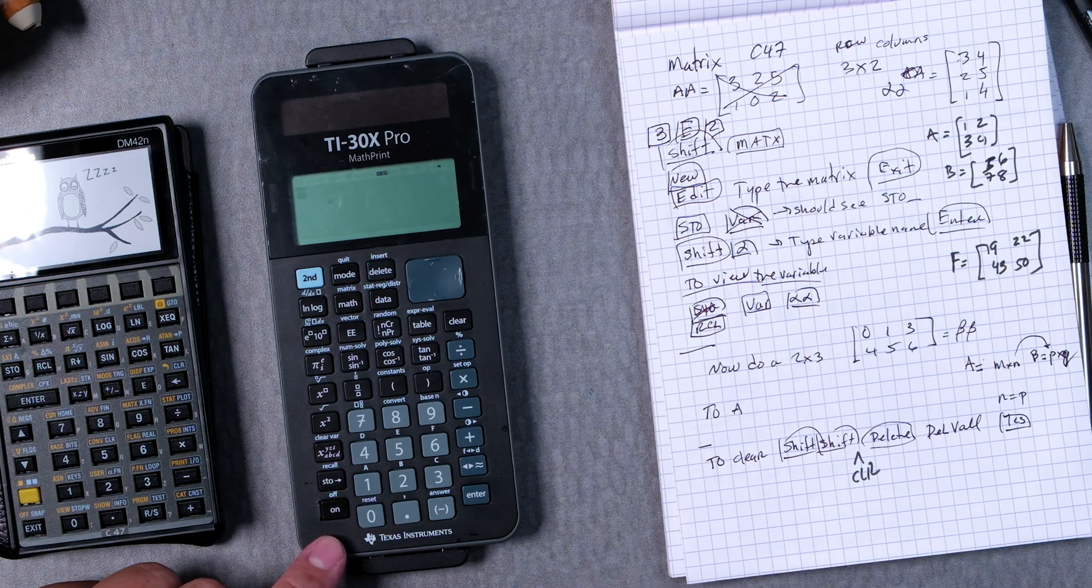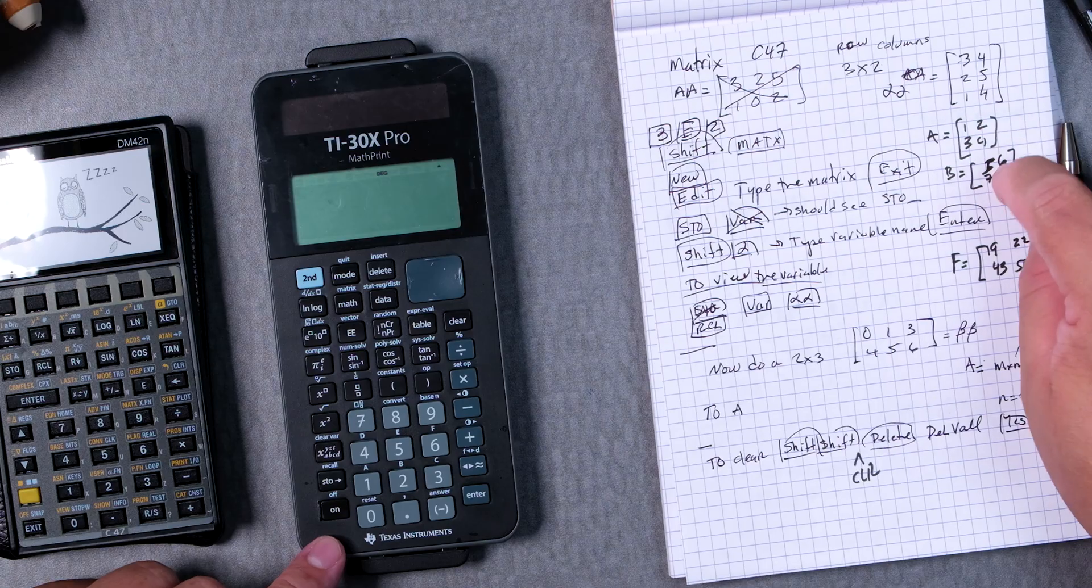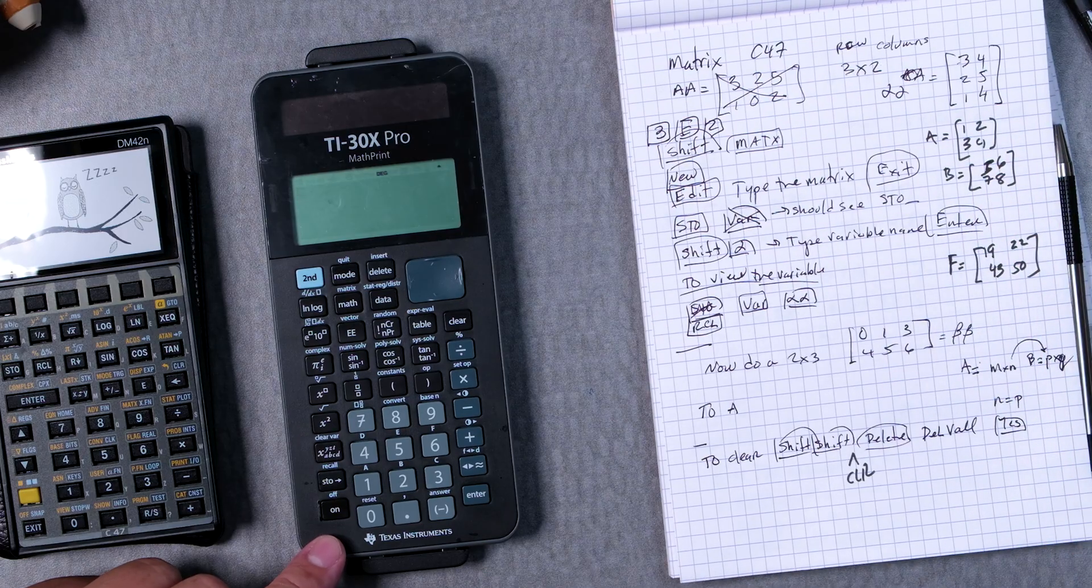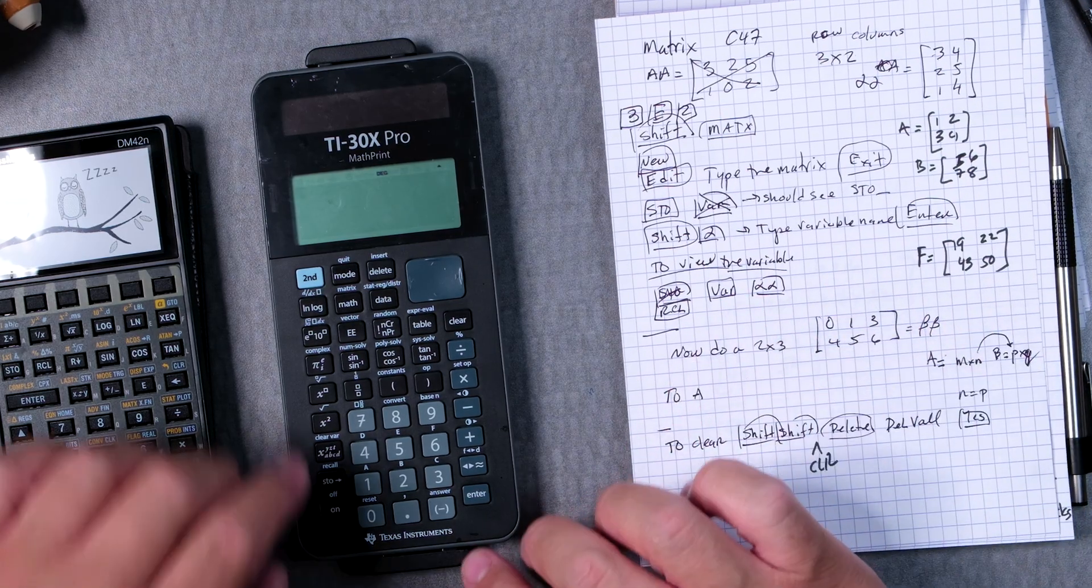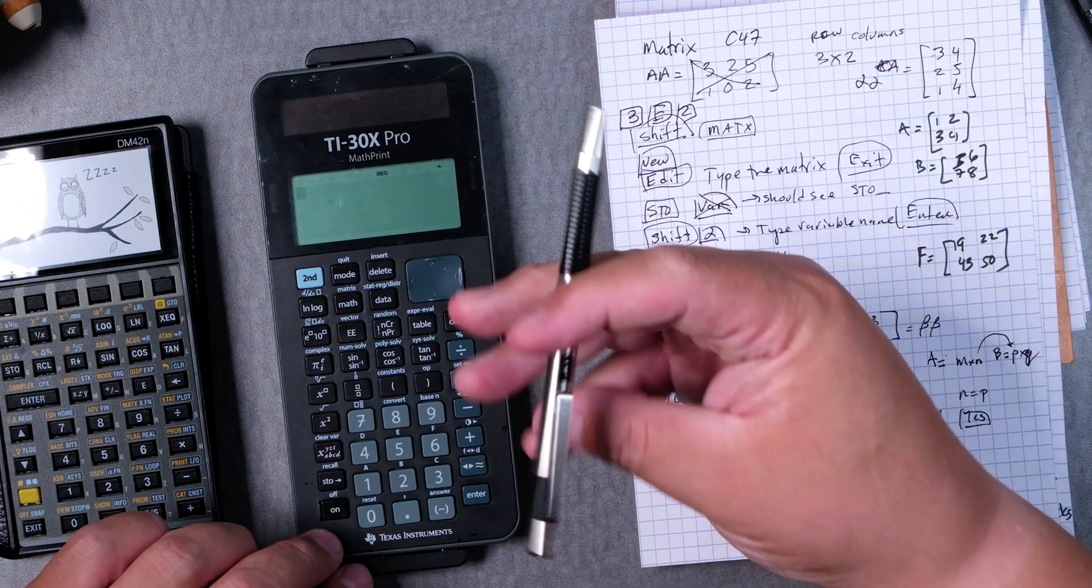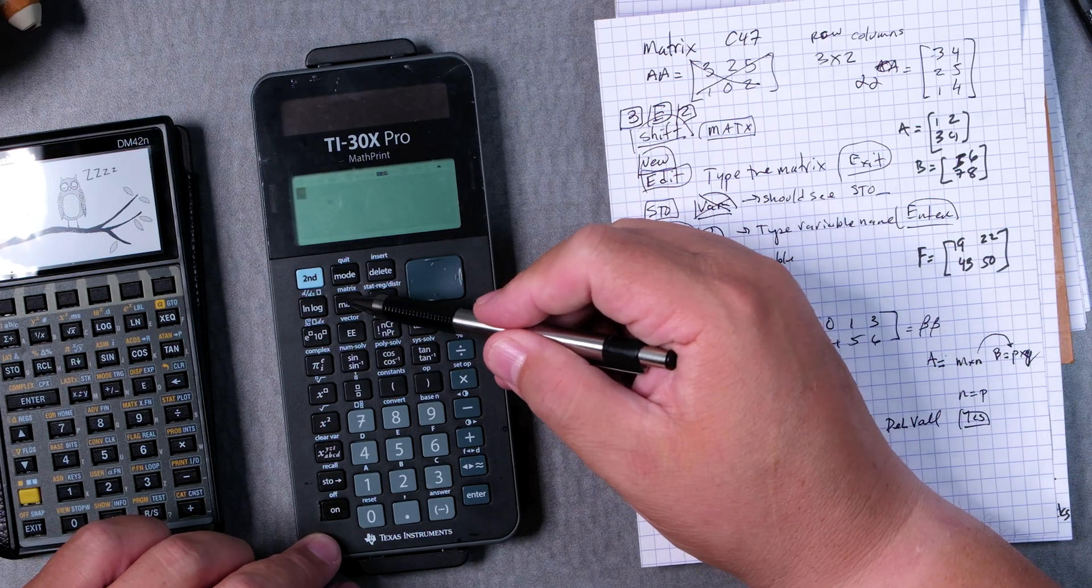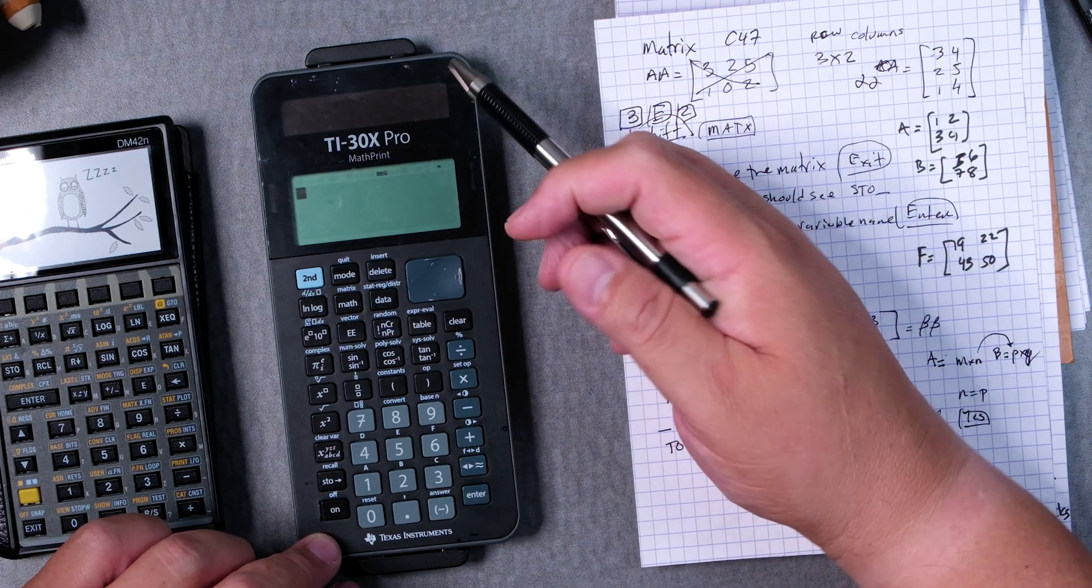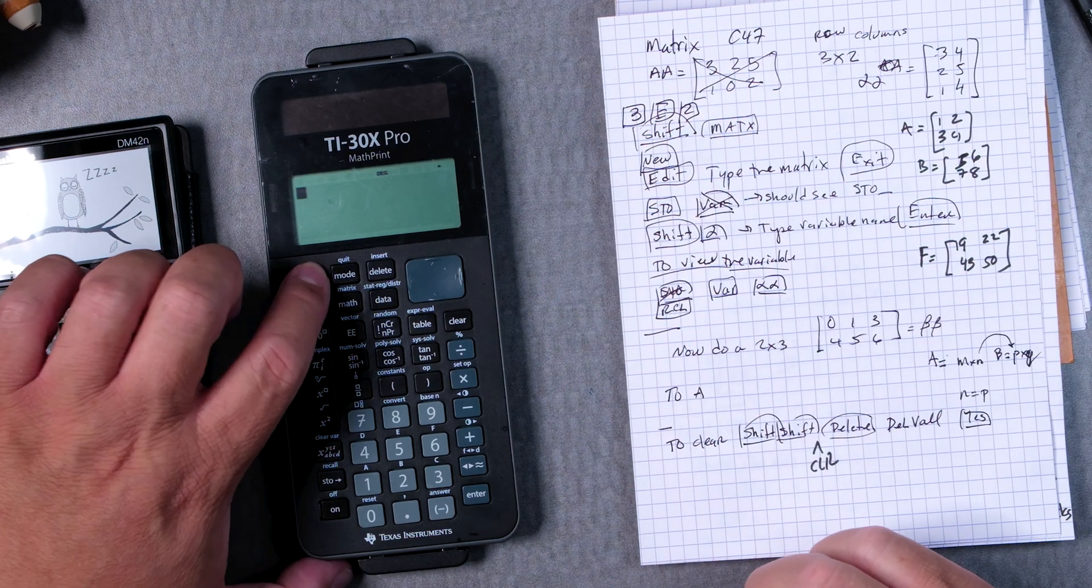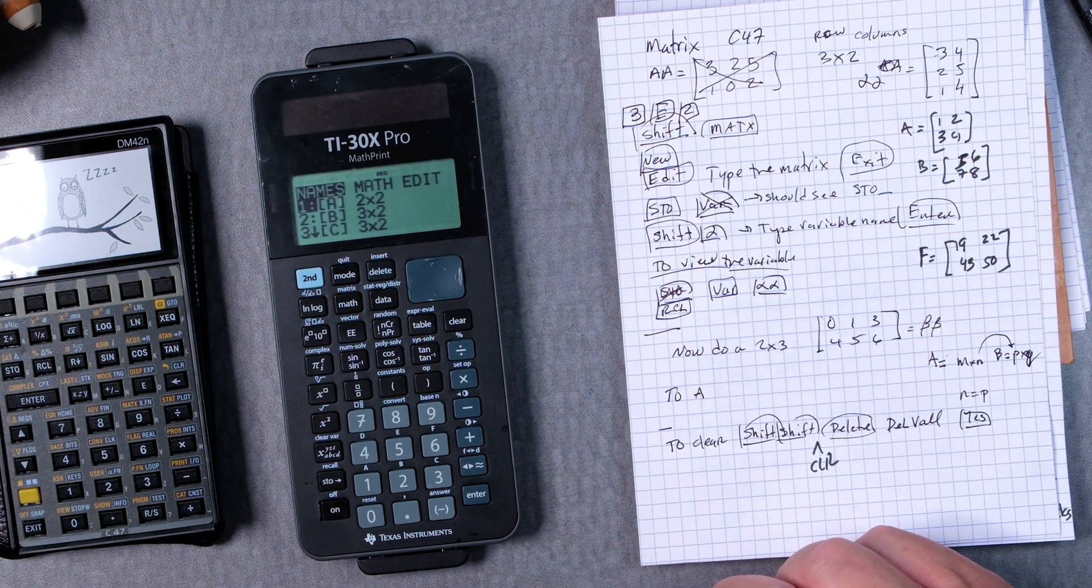So two matrices A and B, which is over here, and I do have the answer. We're going to use the shift button and above math there's matrix. So shift, matrix, we got it.